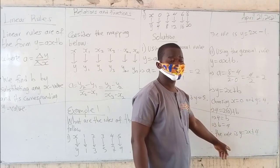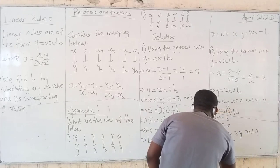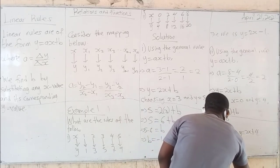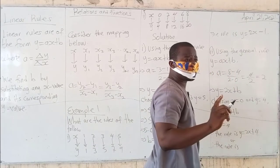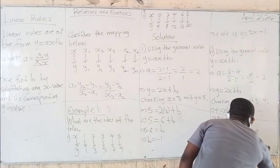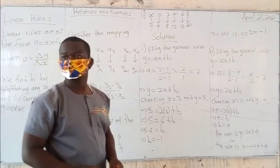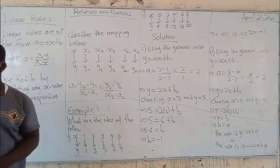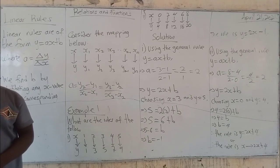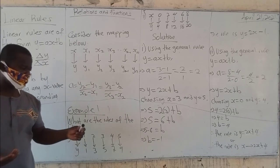Or you can say: therefore the rule is X maps to 2X plus 4. This is also correct. Do you understand? Yes. So that's another way of stating the rule. Alright, both are acceptable.